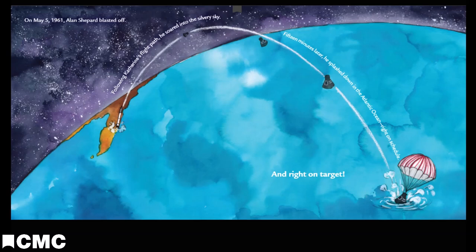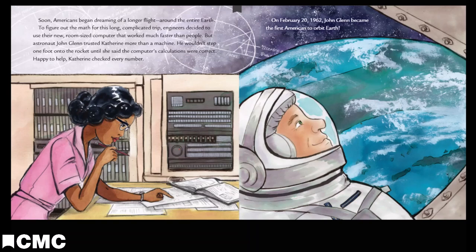Soon, Americans began dreaming of a longer flight around the entire Earth. To figure out the math for this long, complicated trip, engineers decided to use their new room-sized computer that worked much faster than people. But astronaut John Glenn trusted Catherine more than a machine. He wouldn't step one foot onto the rocket until she said the computer's calculations were correct. Happy to help, Catherine checked every number. On February 20th, 1962, John Glenn became the first American to orbit Earth.